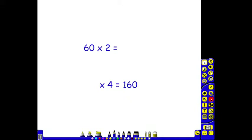The children should be able to complete calculations such as these fairly quickly. So for example, 60 multiplied by 2. I know that 6 multiplied by 2 is 12 so 60 multiplied by 2 is 120. Something multiplied by 4 is 160. I know that 4 multiplied by 4 is 16 so 40 multiplied by 4 is 160.